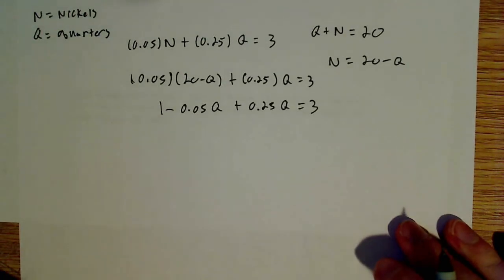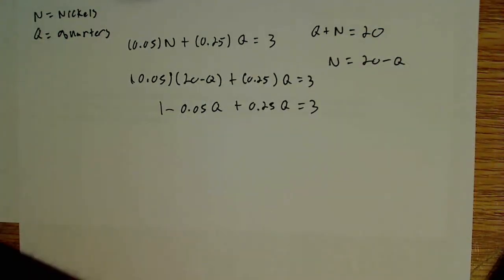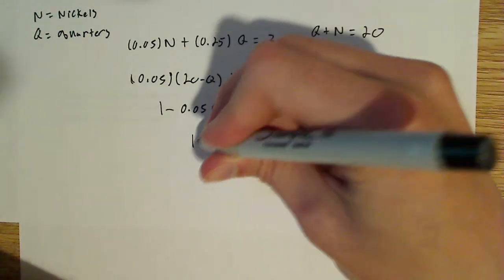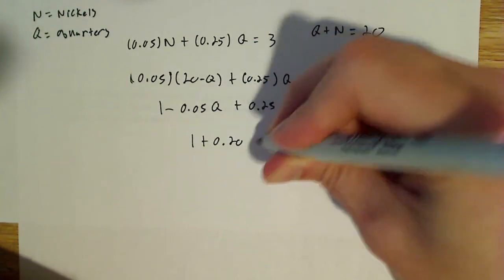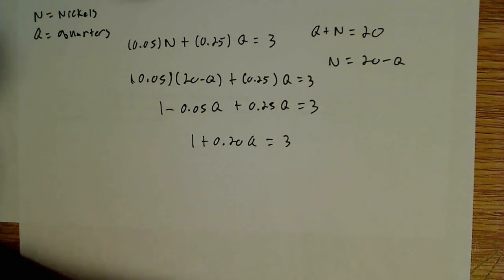Now once again we're in a situation where we have to make sure we add these two together here. So 0.25 minus 0.05 is essentially what we have there. That leaves us with one plus 0.20q and that's all equal to three.